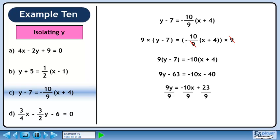Divide both sides by 9 to isolate y. Our final answer is y equals minus 10 over 9x plus 23 over 9.